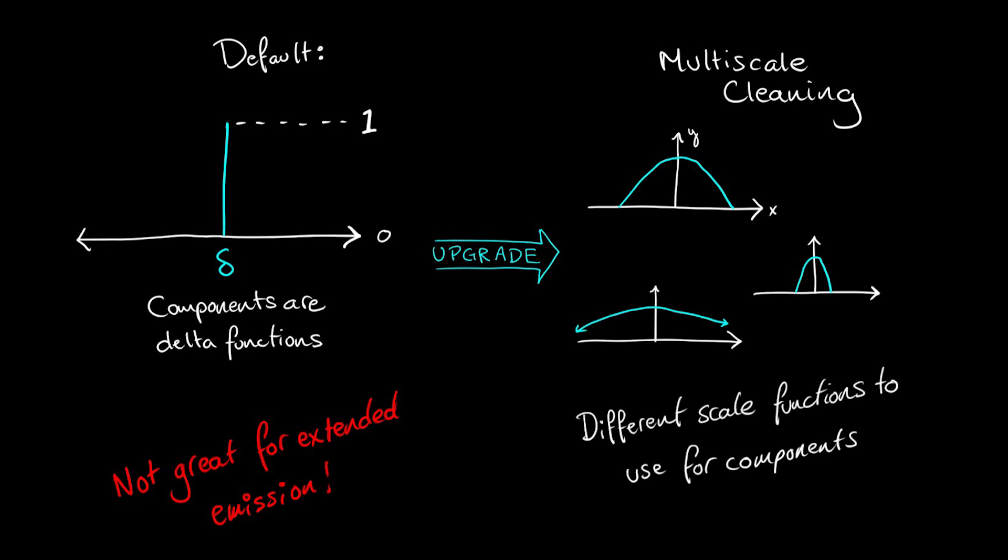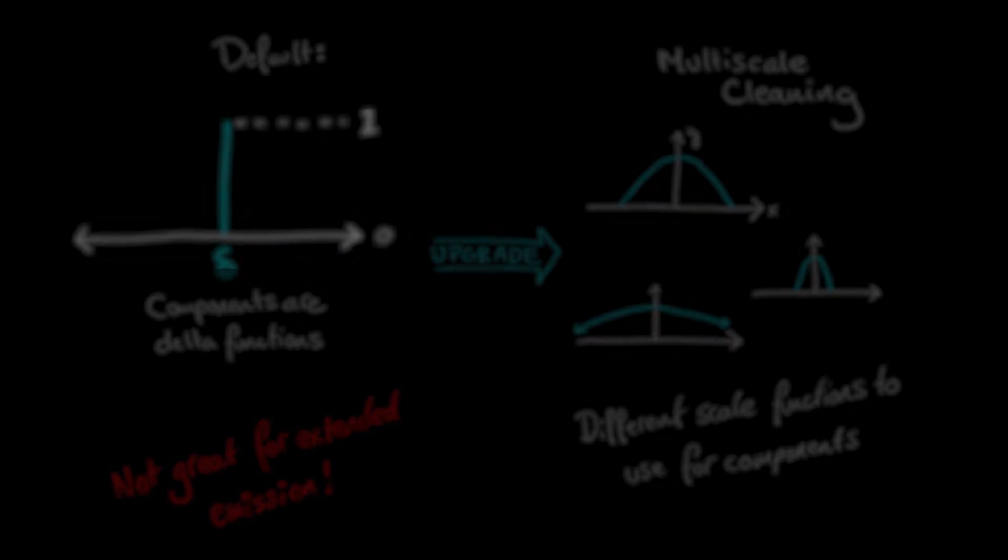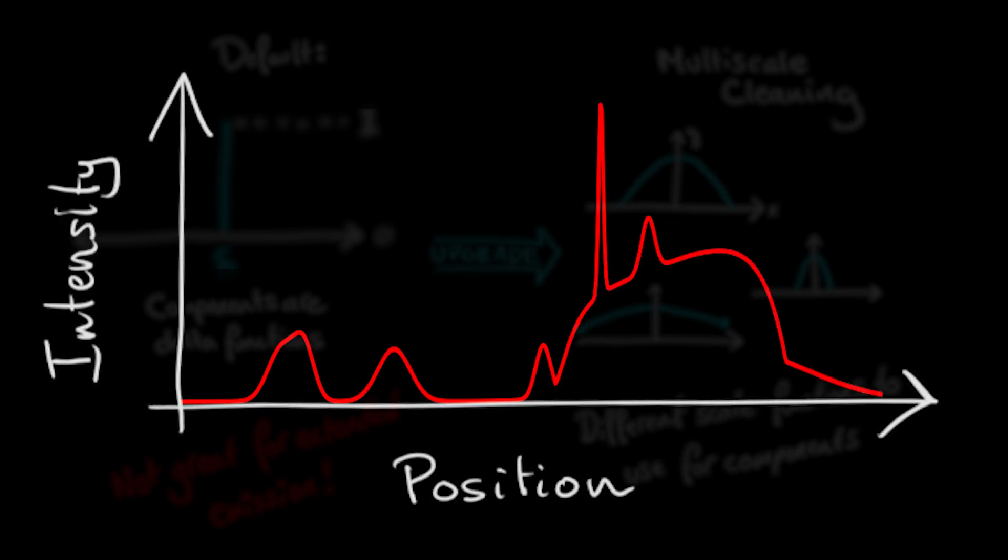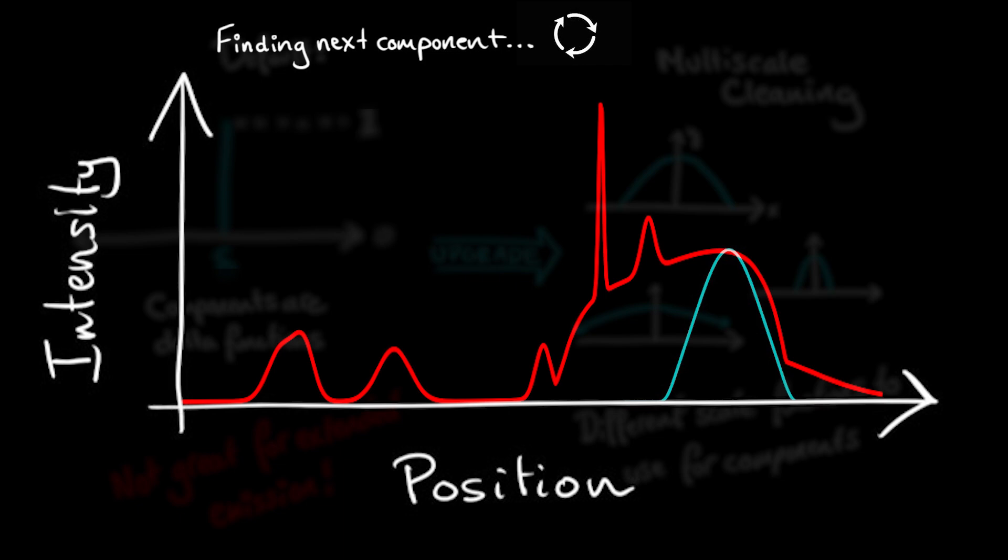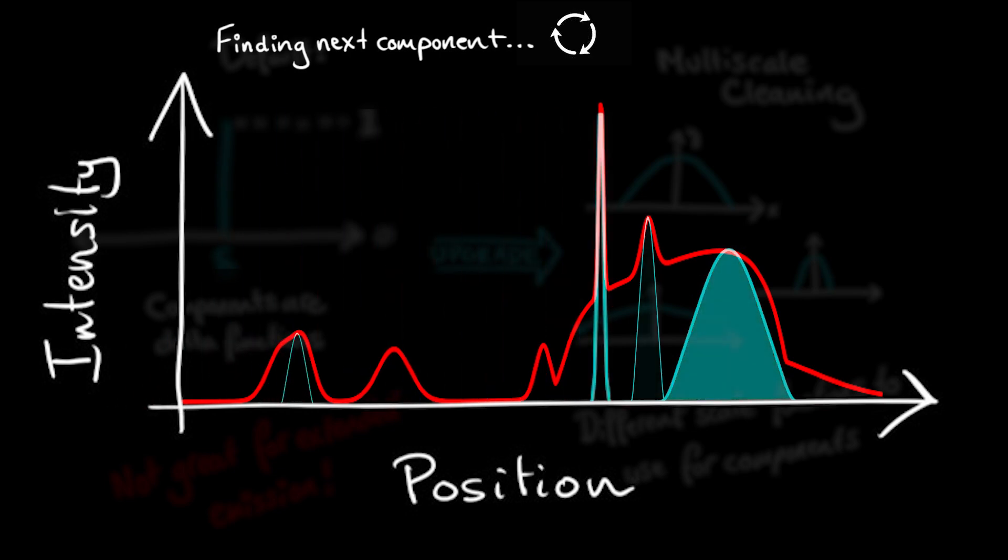In the multi-scale approach, the CLEAN minor cycle iterations use a matched filtering technique to measure the location, the amplitude, and scale of the dominant flux component in each iteration, while considering all scales together, and then chooses model components in order of decreasing integrated flux.